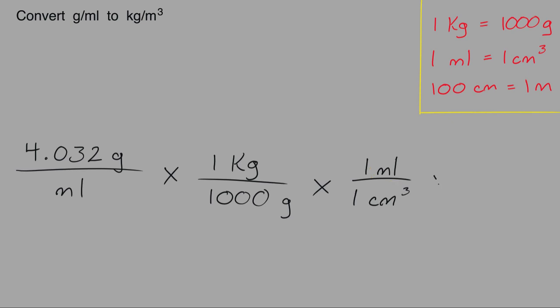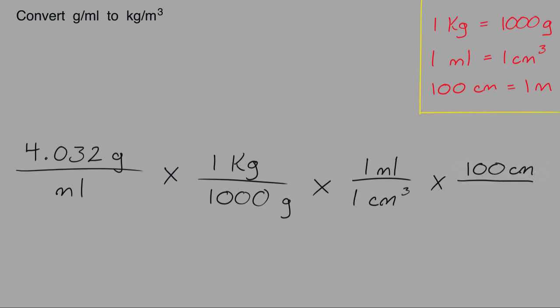The next thing we're going to do is multiply this by the conversion ratio of 100 centimeters equals 1 meter. We can't just use the unit of centimeters here because this centimeters is raised to the power of 3, so what we'll do is raise this whole fraction to the power of 3. This would effectively cancel the units of cubic centimeters, because when you have the same units on the top and bottom of the fractions, you can cancel them.